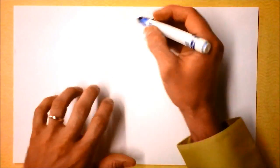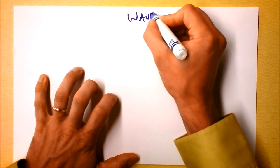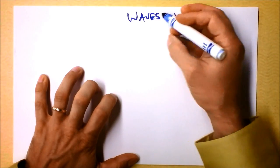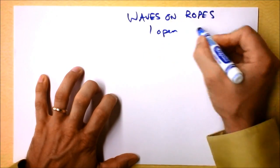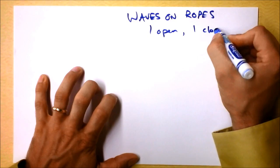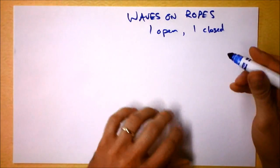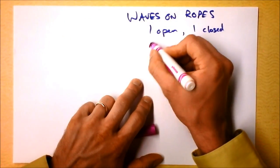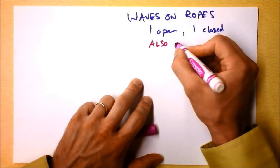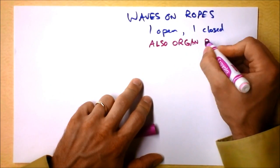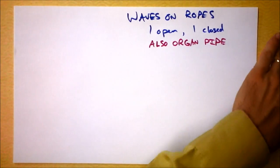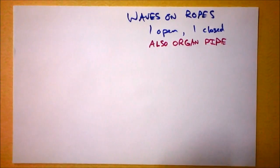This video is about waves on ropes with an open boundary condition. Waves on ropes, one open, one closed. Of course, our argument will also work just as well for sound in a tube, like an organ pipe, for instance. Where we've got an open end and a closed end, we'll have exactly the same frequencies possible.